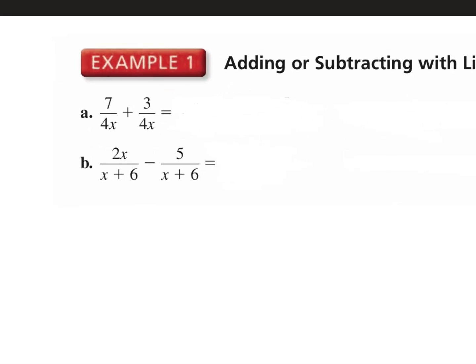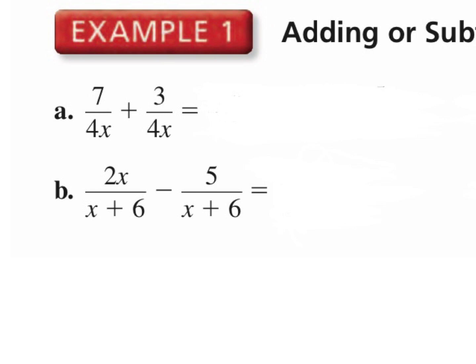Let's look at example 1. We already have a common denominator, so we just add the numerators. We get 10 over 4x, and the denominator stays the same. How could I simplify this? I would divide the top and the bottom by 2, so that gives me 5 over 2x.